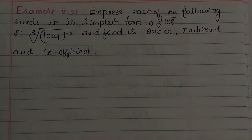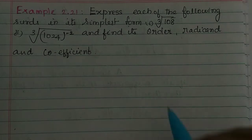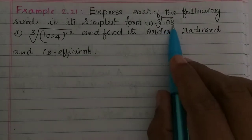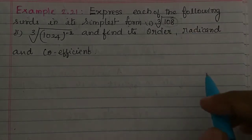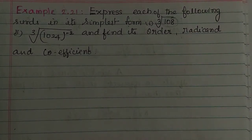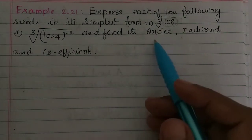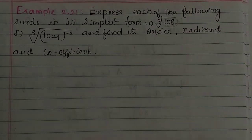Hi students, in this video example 2.21, we express each of the following in its simplest form. The simplest form means all the radicals are simplified. The components of simplest form are: order, radical, and coefficient.